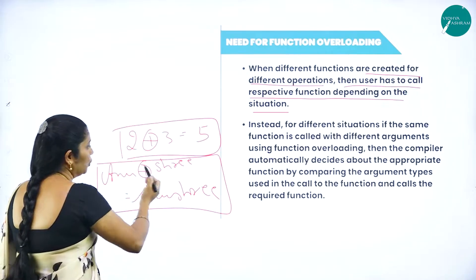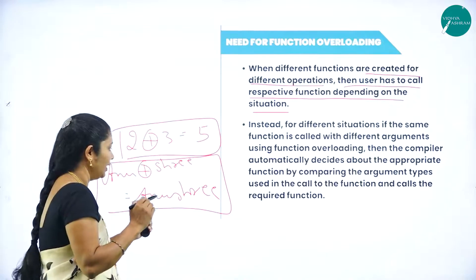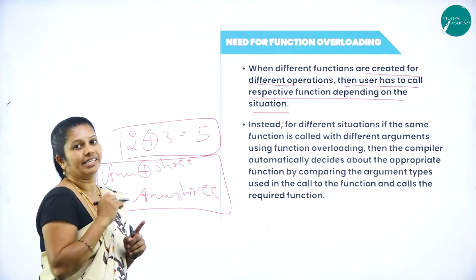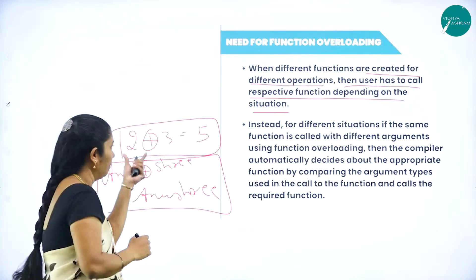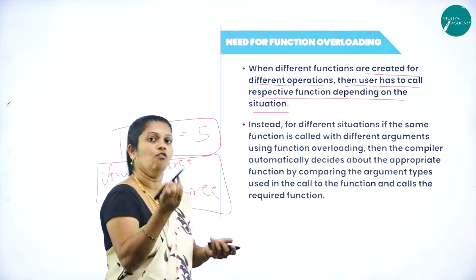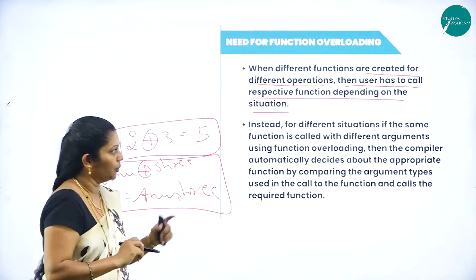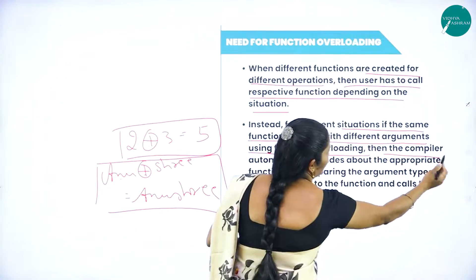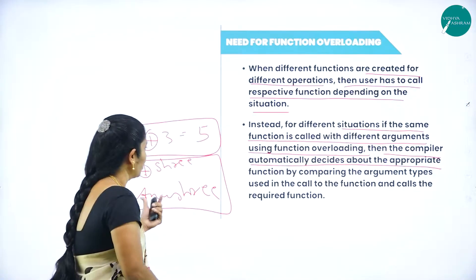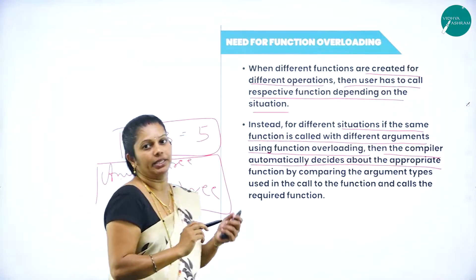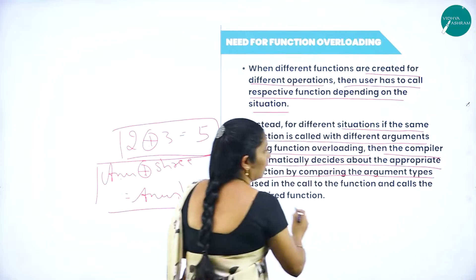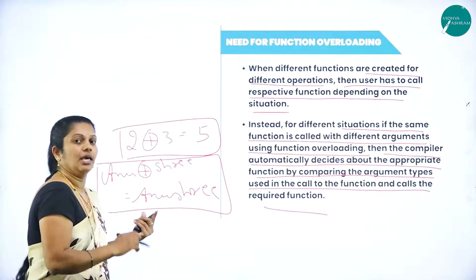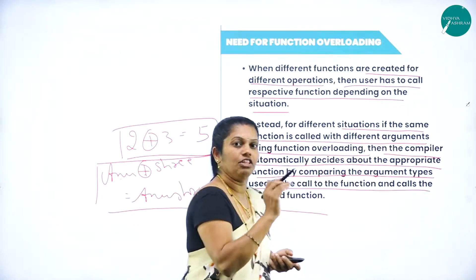In 2 + 3 the result adds the values to give 5, but adding 'Anu' + 'Shri' combines the strings. Depending on the type of arguments, the particular function performs accordingly. Instead of handling different situations separately, using function overloading, the compiler automatically decides which function to execute by comparing the argument types, and calls the required function.